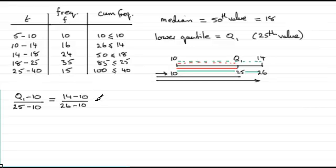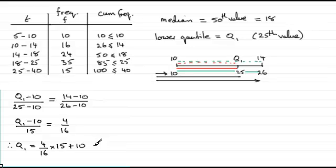All I need to do now is rearrange this to get Q1 minus 10 divided by 15 equals 4 over 16. And then if I multiply both sides by 15 and then add 10, I get that therefore Q1 equals 4 divided by 16, multiplied by 15, plus 10. And if you work this out, you end up with 13.75.